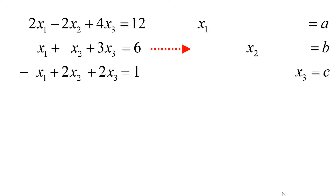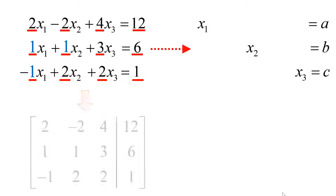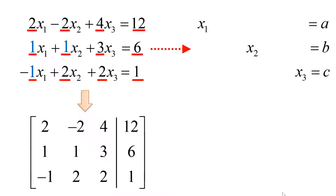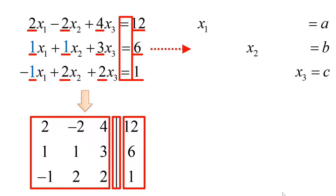Gauss-Jordan elimination is an algorithm to systematically eliminate the unknowns from each equation. The first step is to build an augmented matrix from the system of linear equations. The elements of the augmented matrix are nothing more than a collection of coefficients and numbers in the equations. Coefficients are the numbers sitting in front of unknowns — if you do not find any, it means you have 1. We also need the numbers on the right-hand side: here we have 12, 6, and 1. We create a two-dimensional array of elements with coefficients and the numbers, and use a vertical bar to represent the equal signs. This augmented matrix is equivalent to the system of linear equations.